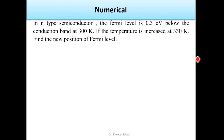In n-type semiconductor, the Fermi level is 0.3 eV below the conduction band at temperature T = 300 Kelvin. If the temperature is increased to 330 Kelvin, find the new position of the Fermi level.